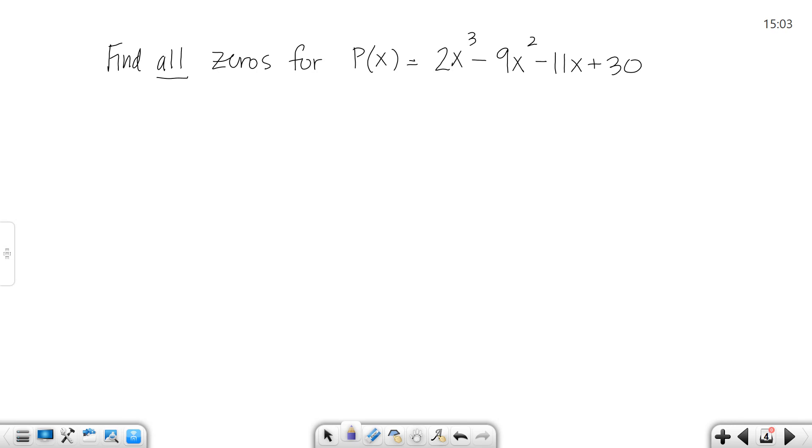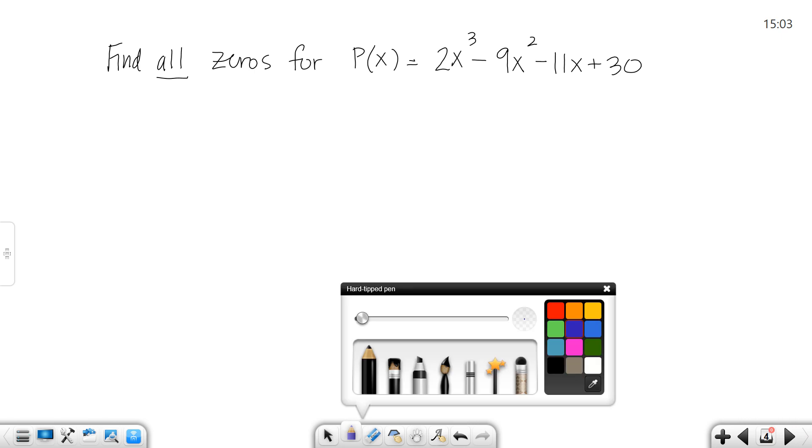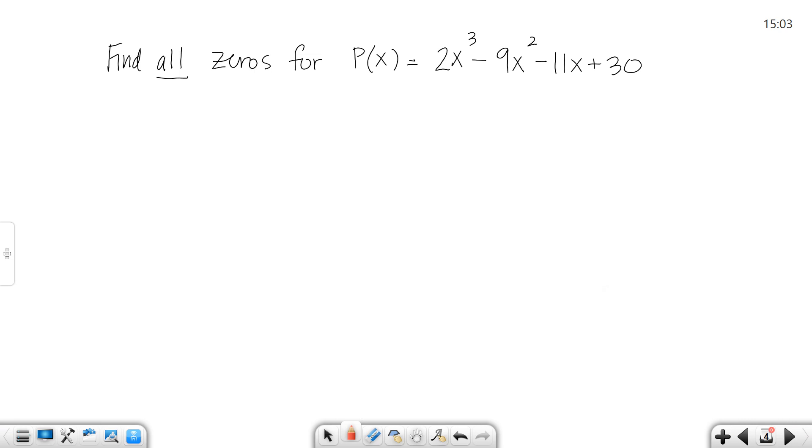Here we go with this problem. You'll notice that the directions say find all zeros. That's a little tricky. To find all zeros, we're going to use synthetic division, then factor, and then solve, just like we started this section. We're going to do all those steps, but where do we start?